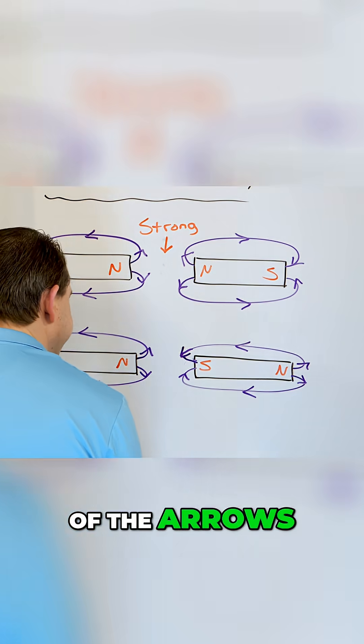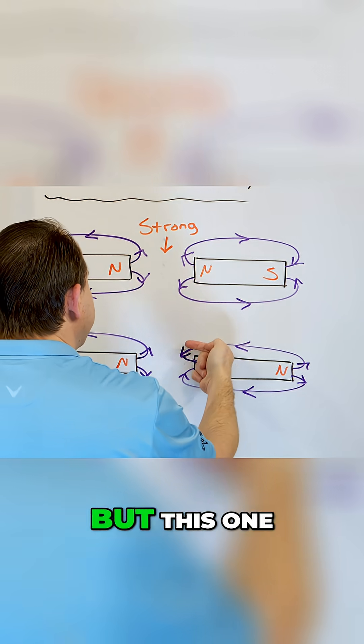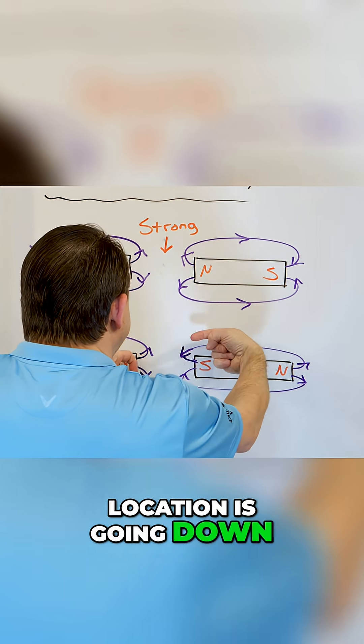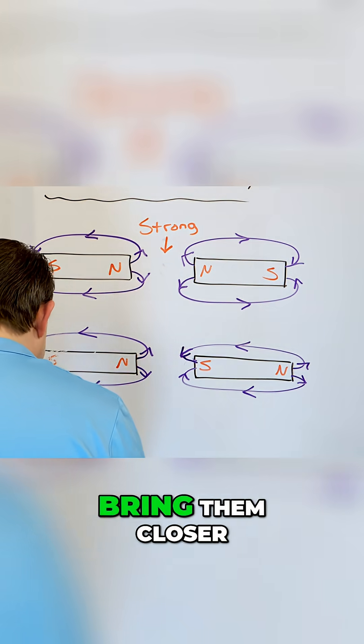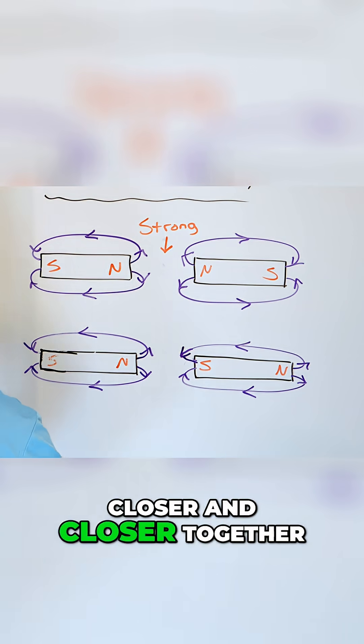Notice the direction of the arrows when I bring these things closer together. Notice that this one is going up but this one at the same location is going down. They're fighting each other and as I bring them closer and closer together, I messed up my drawing, I'm sorry about that.